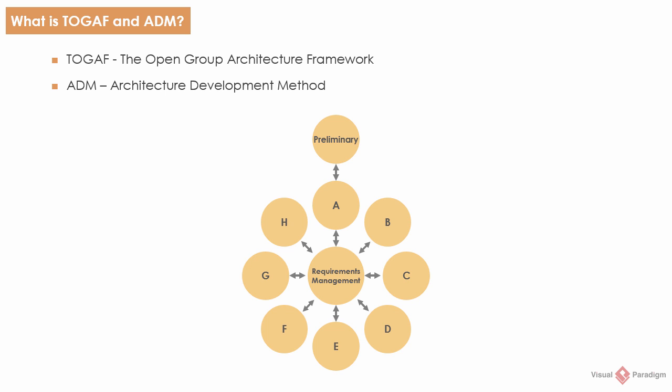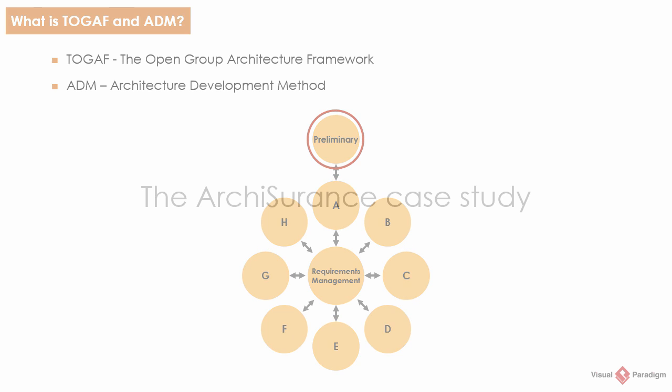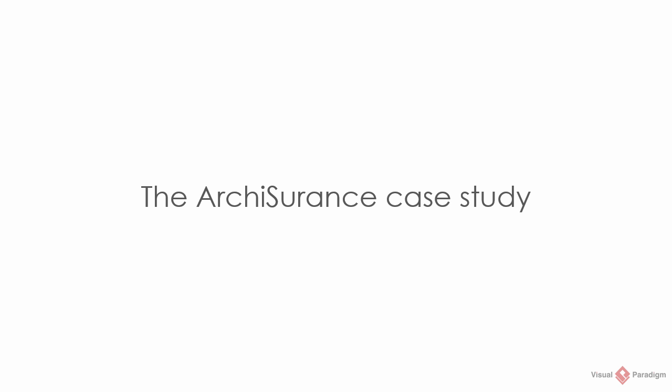When we talk about ADM, we usually refer to this architecture development cycle. An ADM cycle has a number of phases, starting from the Preliminary Phase and then A, B until H. Each phase is further divided into steps, and by performing the steps, the enterprise architecture will be further defined. During the process, a set of documents will also be created — we call them the deliverables. In this video, we will start from the Preliminary Phase. The ARCHISURANCE case study will be used to illustrate the use of TOGAF and ArchiMate in enterprise architecture.